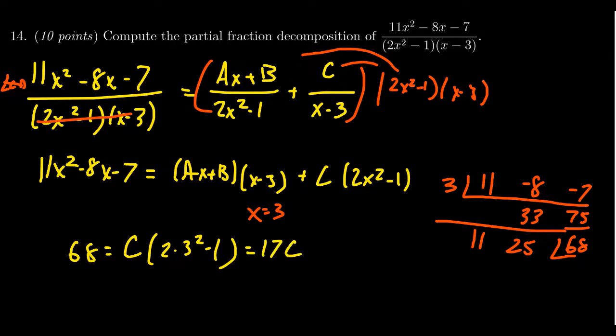So you get 17 times c. We want to divide both sides by 17, like we did right here. And then 17 goes into 68 exactly four times. So that was fortuitous. We get c is equal to 4. Great.